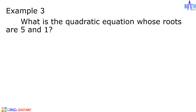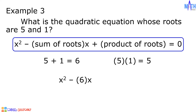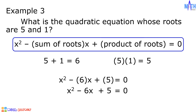Last example: what is the quadratic equation whose roots are 5 and 1? The sum of the roots, 5 plus 1, is equal to 6. The product of the roots, 5 times 1, is equal to 5. Then we have x squared minus 6 times x plus 5 equals 0. The quadratic equation whose roots are 5 and 1 is x squared minus 6x plus 5 equals 0.